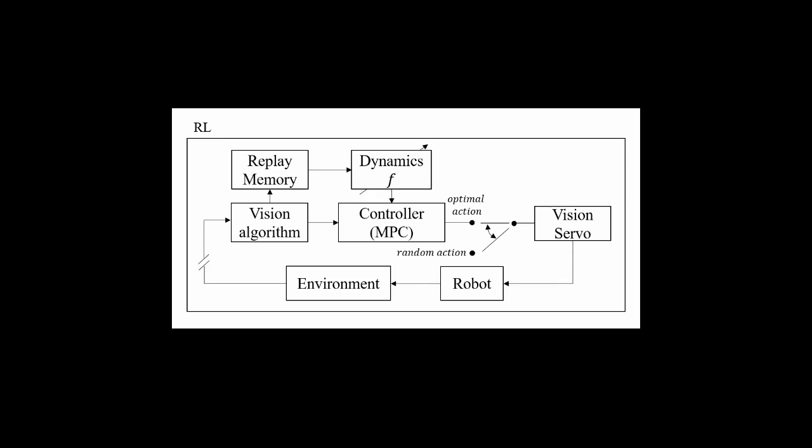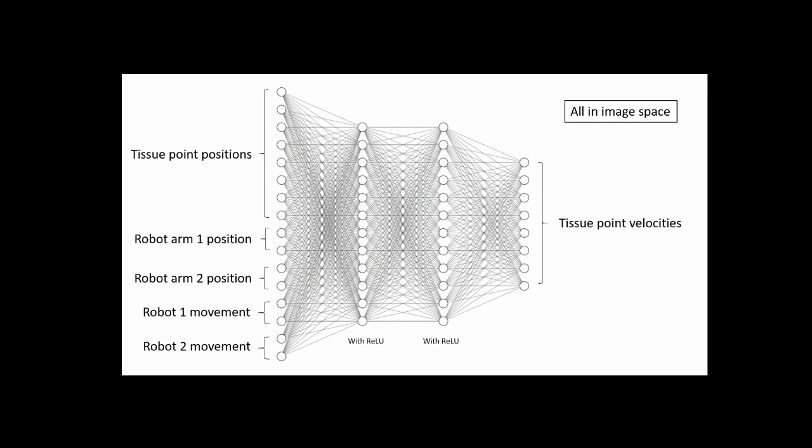A model-based reinforcement learning algorithm that learns the dynamics of tasks by trial and error and applies the learned dynamics to model predictive control is used. We use neural networks with two hidden layers to learn the dynamics. The input vector for the dynamics neural network is composed of the position of the robot wrists, position of the tissue points, and the control input for the robot. The output is the velocity of the tissue points.